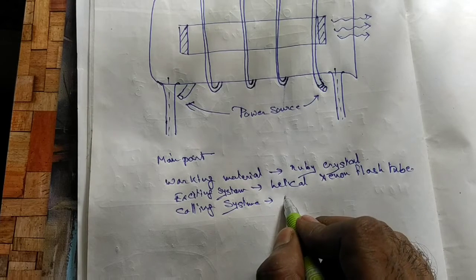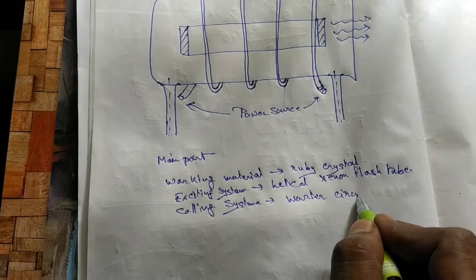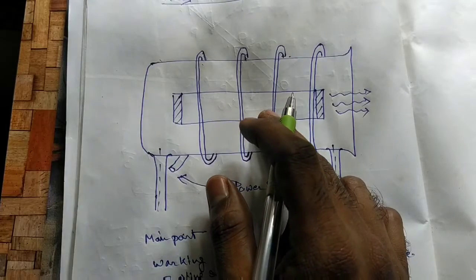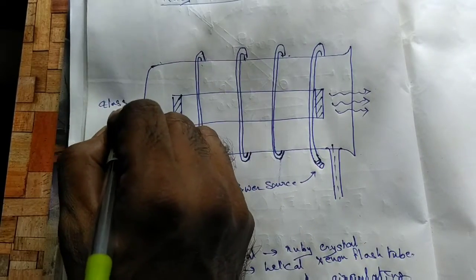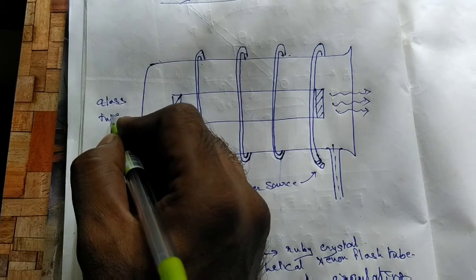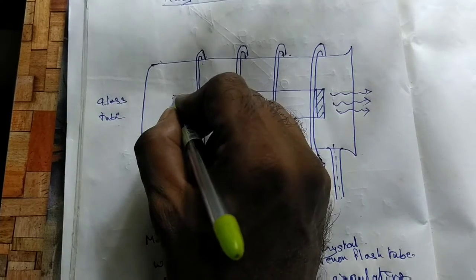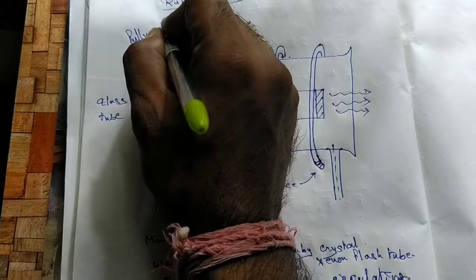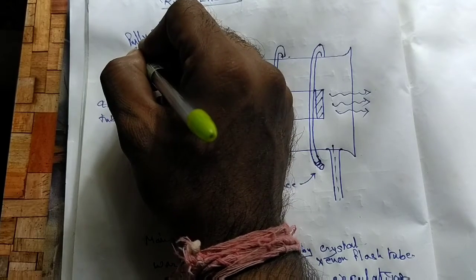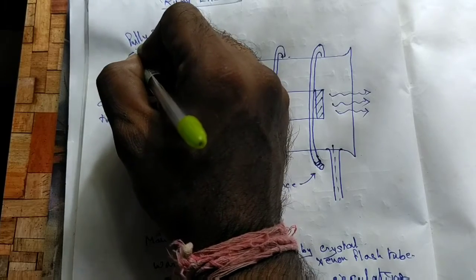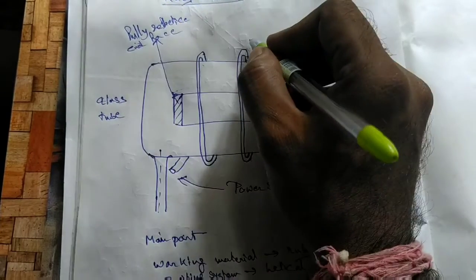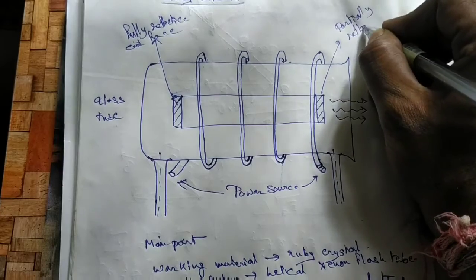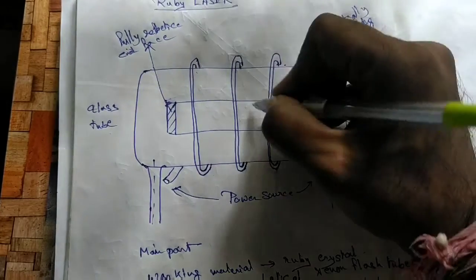The cooling is done by water circulating. This is the main structure of the ruby laser — this is the glass tube, and this is the ruby material. One end is a fully reflecting face, and the other end is a partially reflecting face. And this is obviously the ruby rod, from which the laser beam is emitted.